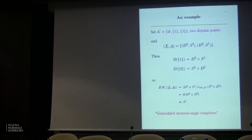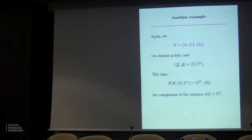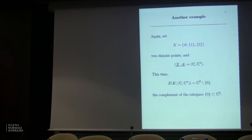The point here is that going from the polyhedral product description to just the union as a topological space is a loss of information. The benefit of indexing everything with a simplicial complex is that this contains more information. In another example, taking X=C and A=C*, the polyhedral product is the complement of the subspace 0 in C^2. You can realize all coordinate subspace arrangements, and also some non-coordinate subspace arrangements, using these constructions.